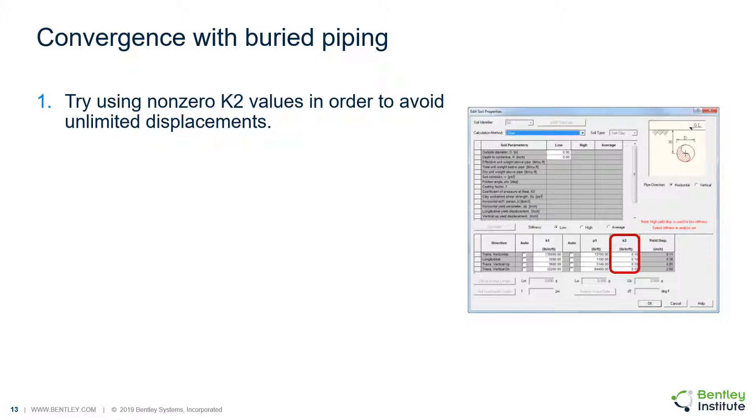Using larger K2 values temporarily, say for example, K2 is equal to K1 divided by 1000 or so, it can help you see if P1 values are sufficient by checking displacements.